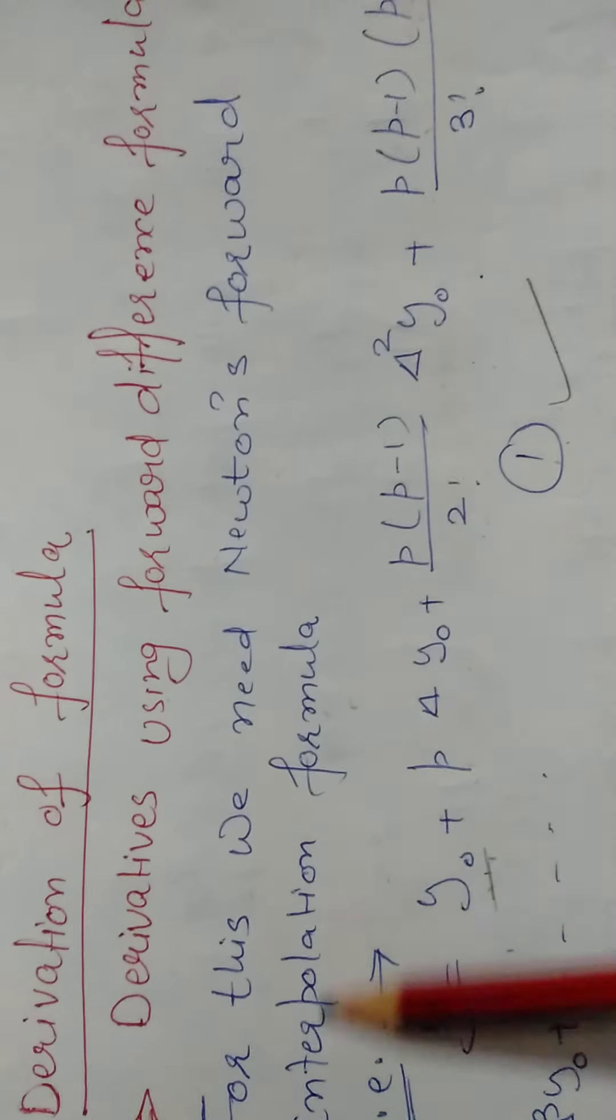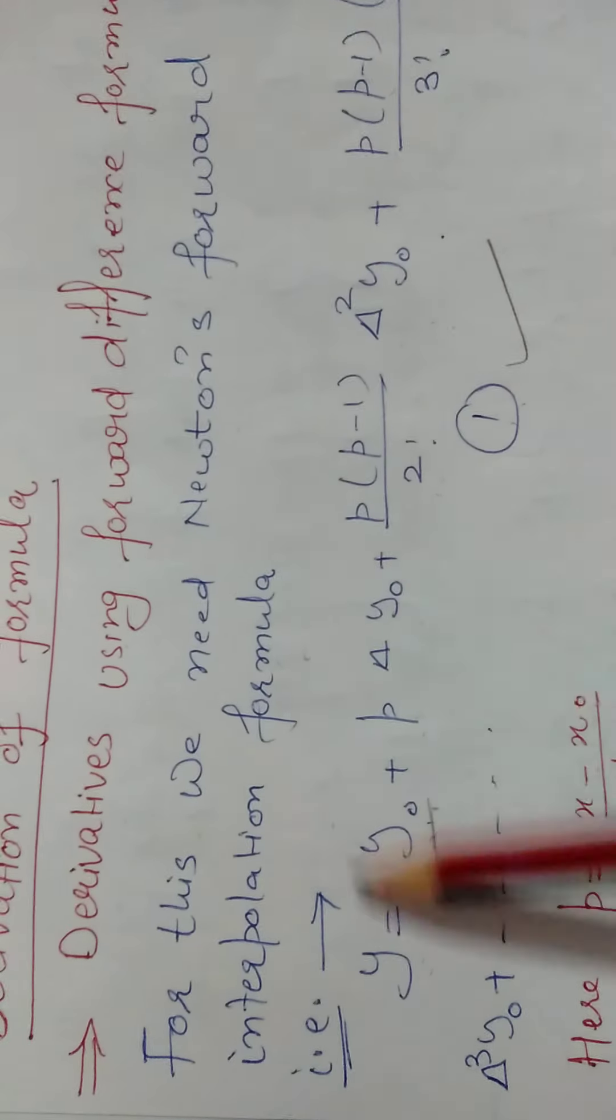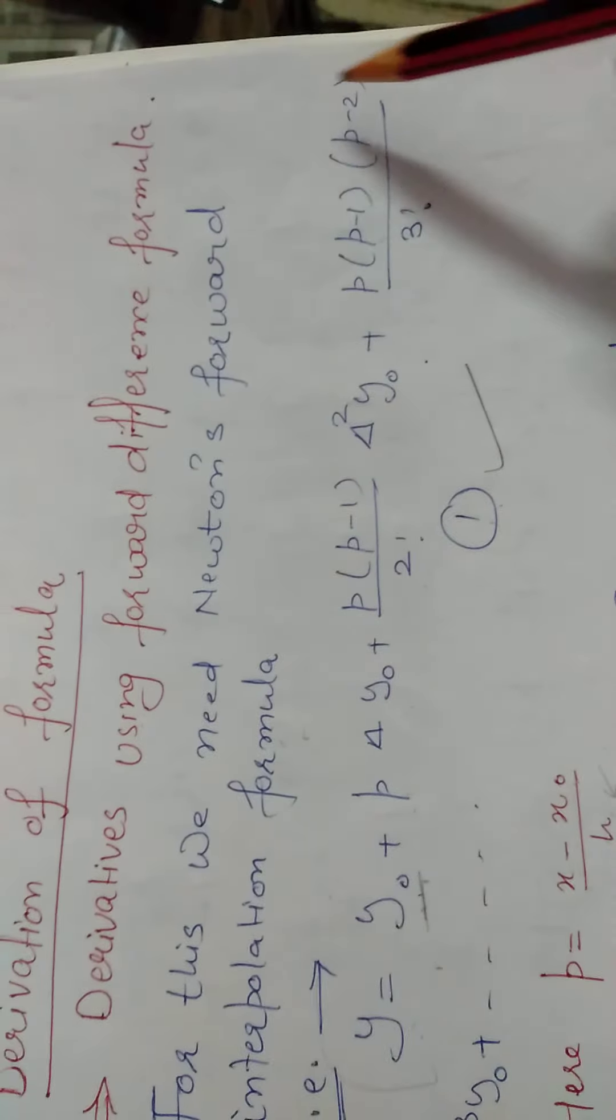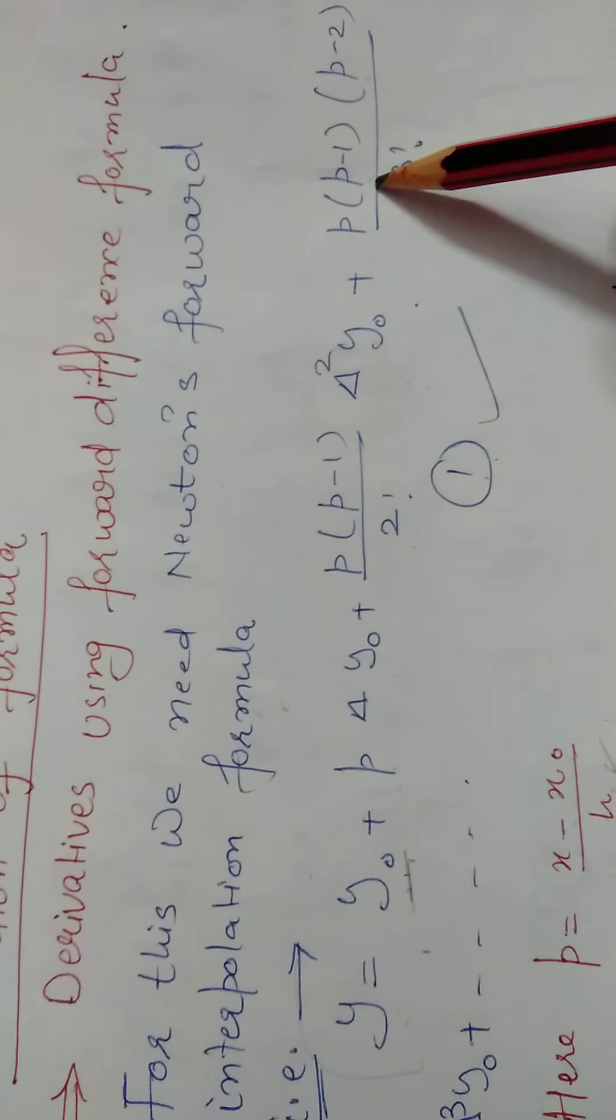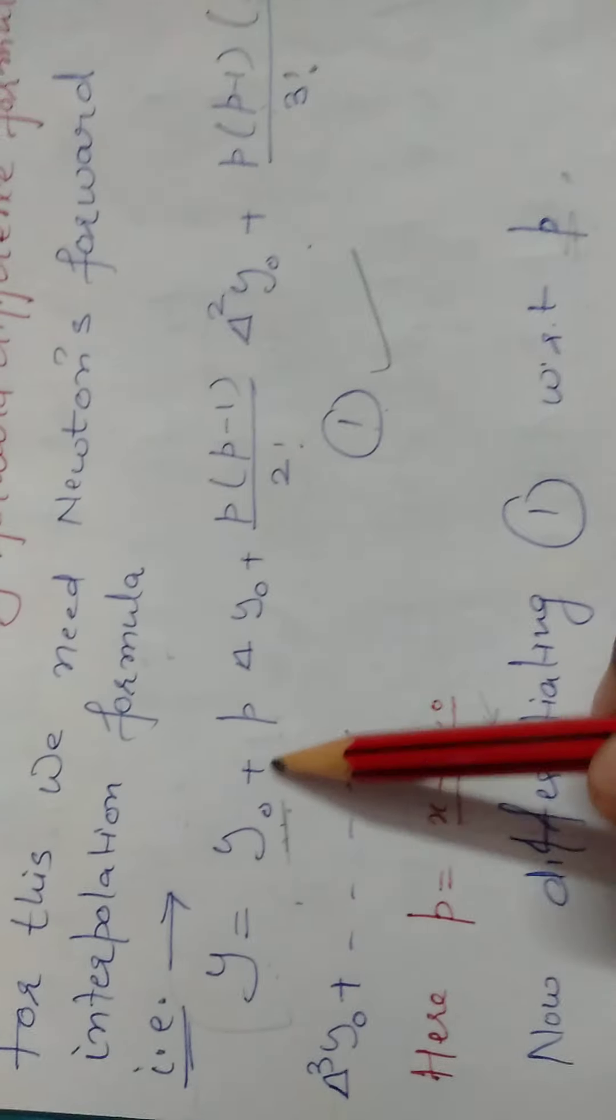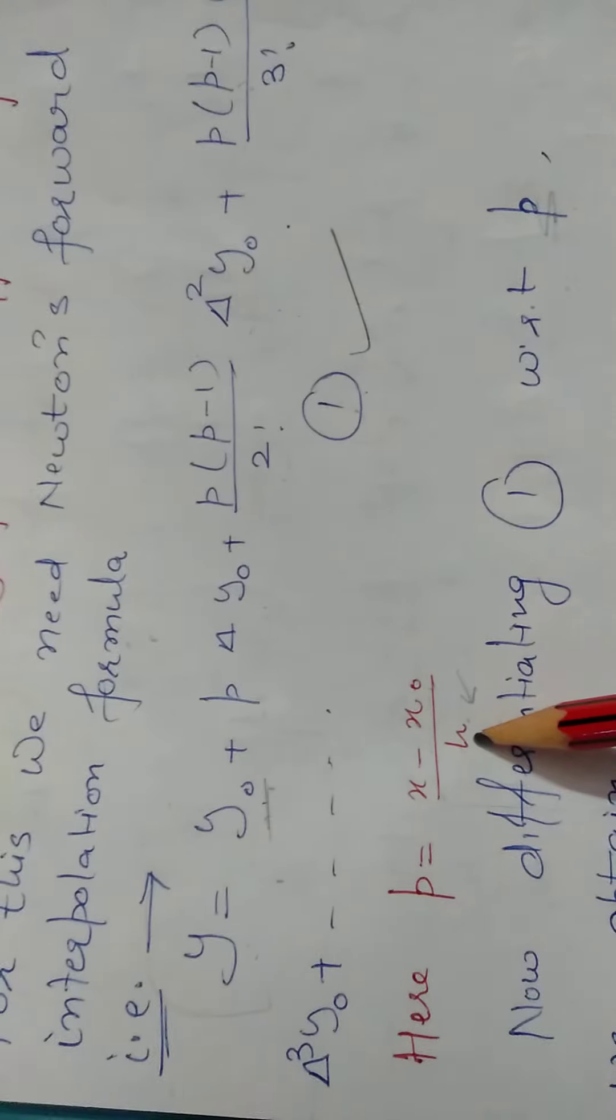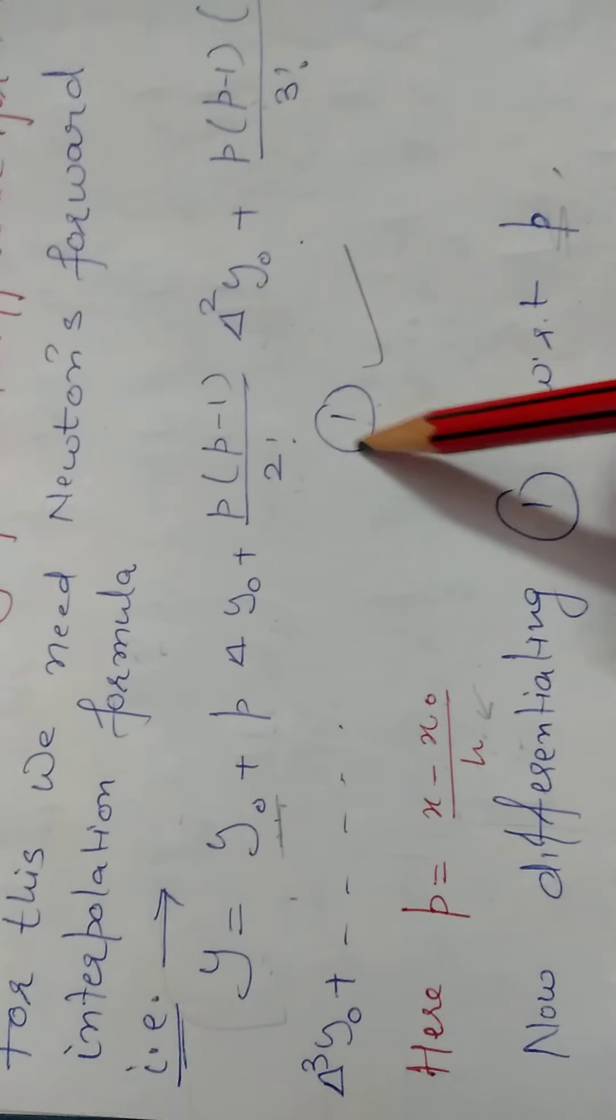First is derivative using the forward difference formula. For this we need Newton's forward interpolation formula from the previous chapter. Here what is P? X minus X naught divided by H. This formula is equation 1.